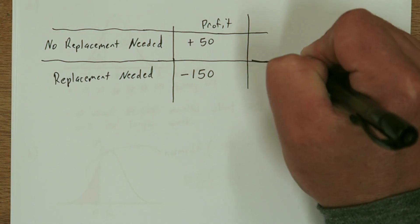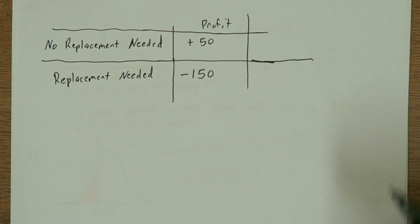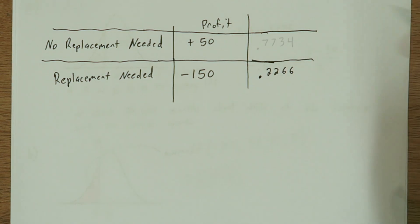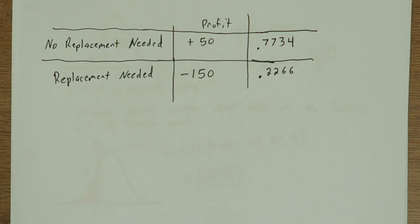So using what we learned in part B, we know the probability of the battery dying within 24 months is 0.2266 approximately. The complement of that event would be the battery not dying.